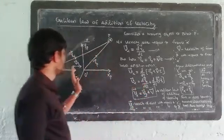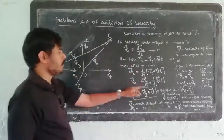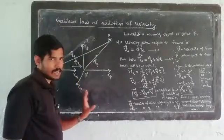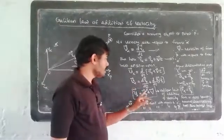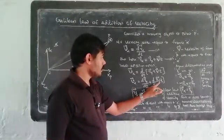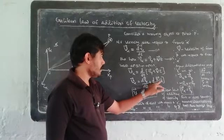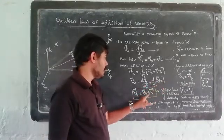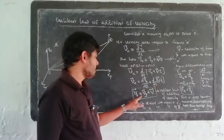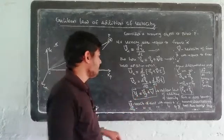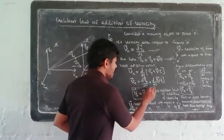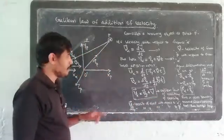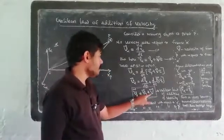Taking the time derivative of r-alpha equals r-beta plus Vt, we get V-alpha equals V-beta plus V, where V-beta is the velocity of the object with respect to frame beta, and V is the constant velocity of frame beta relative to frame alpha. Therefore V-alpha equals V-beta plus V. This is the Galilean law of addition of velocity.